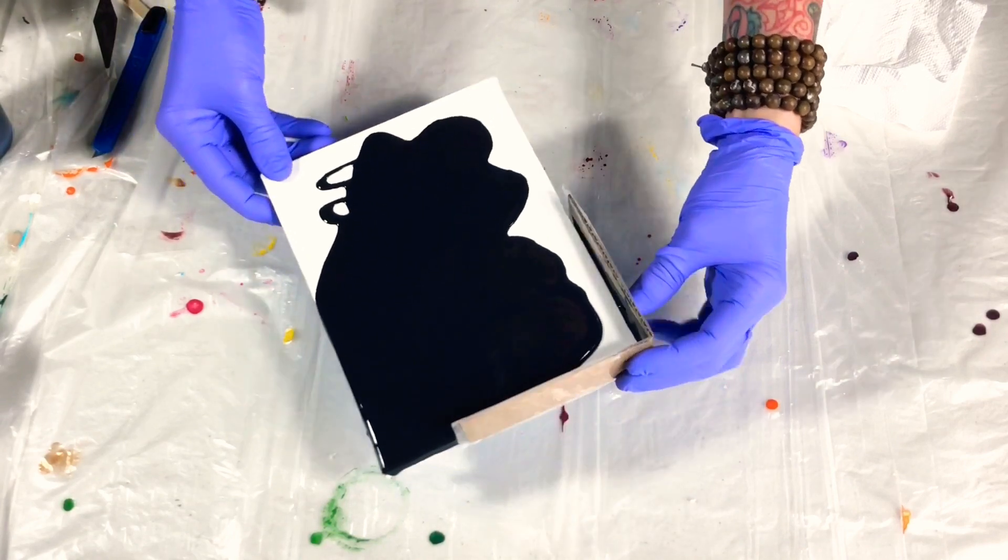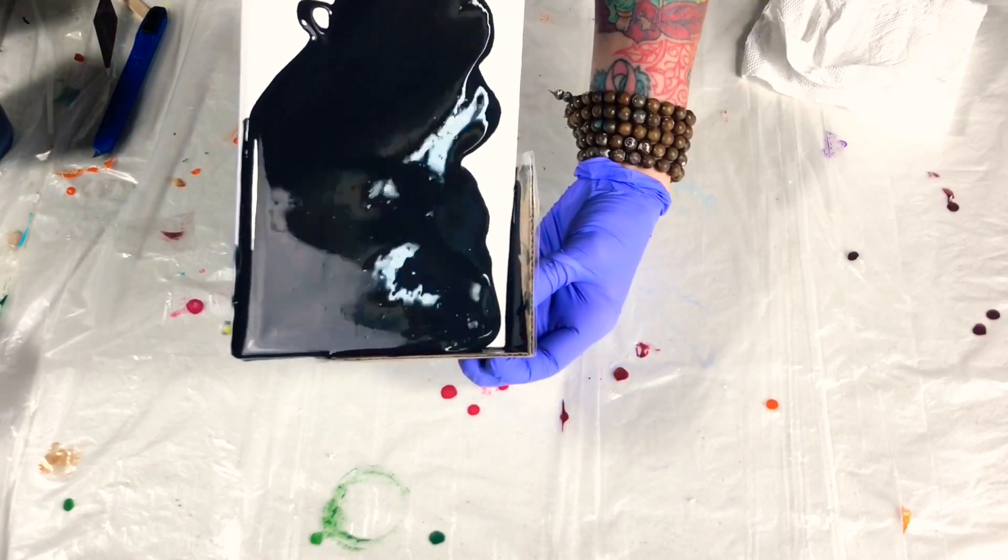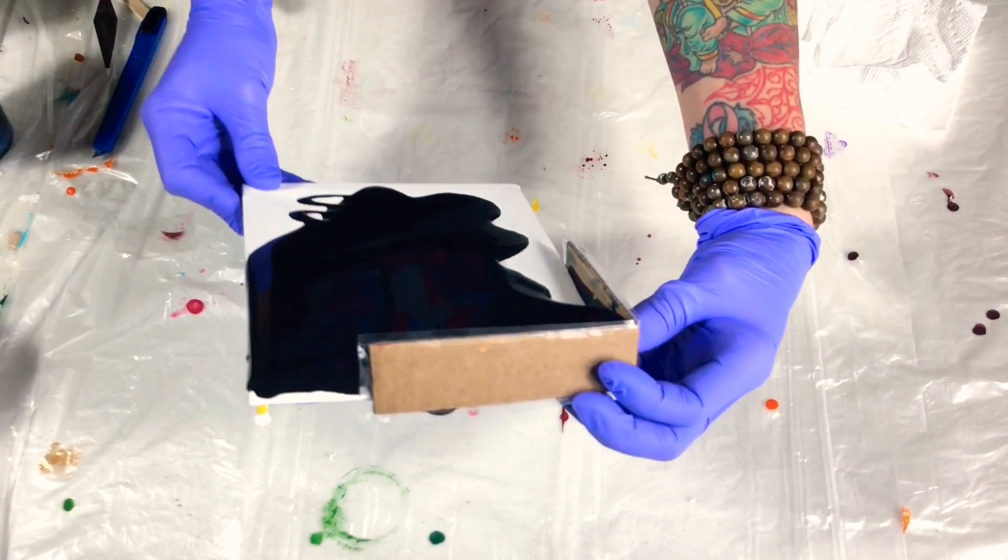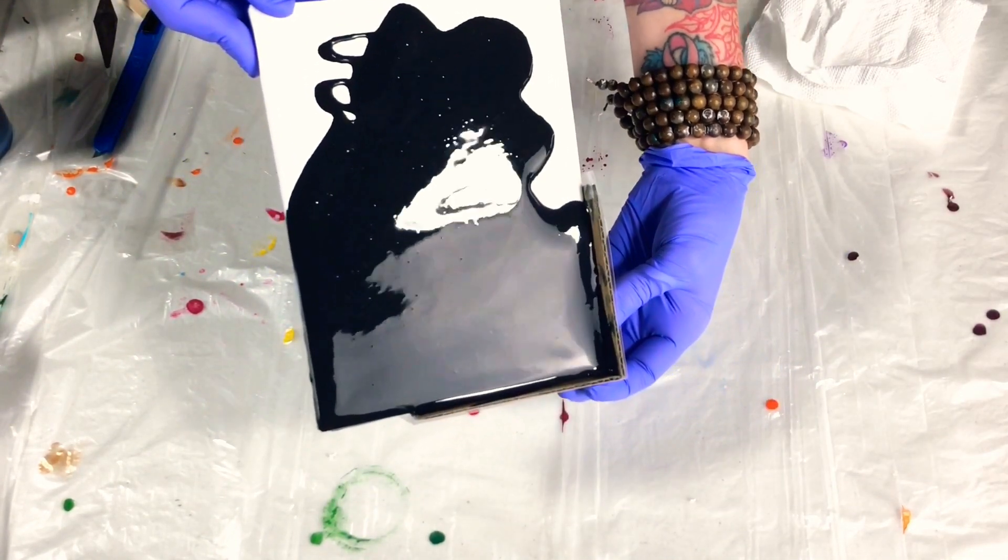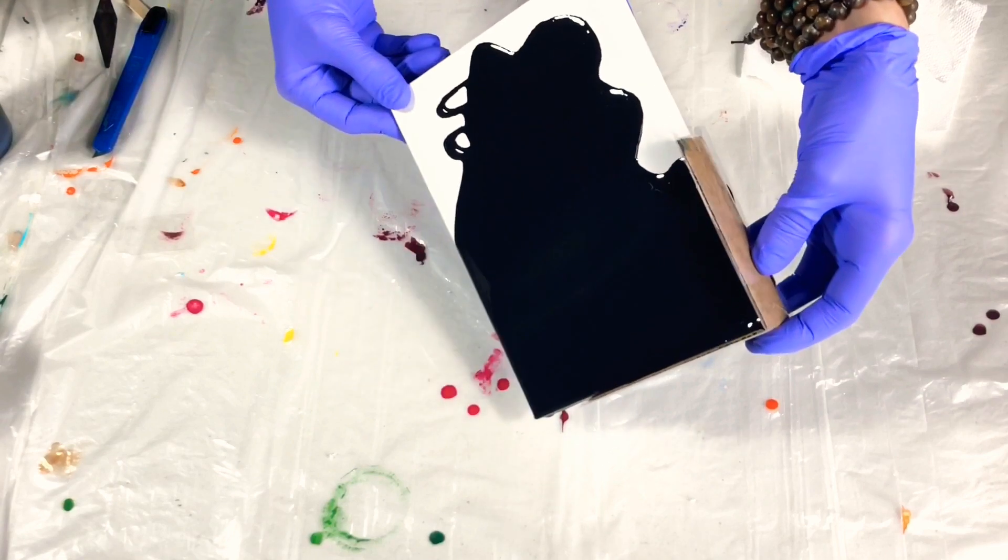I always tilt it back towards me to get the paint a little away from the edge, but when you pull your cardboard away it'll stick a little bit and that will help you cover your edges so you don't have to worry about the paint overflowing onto the edges.